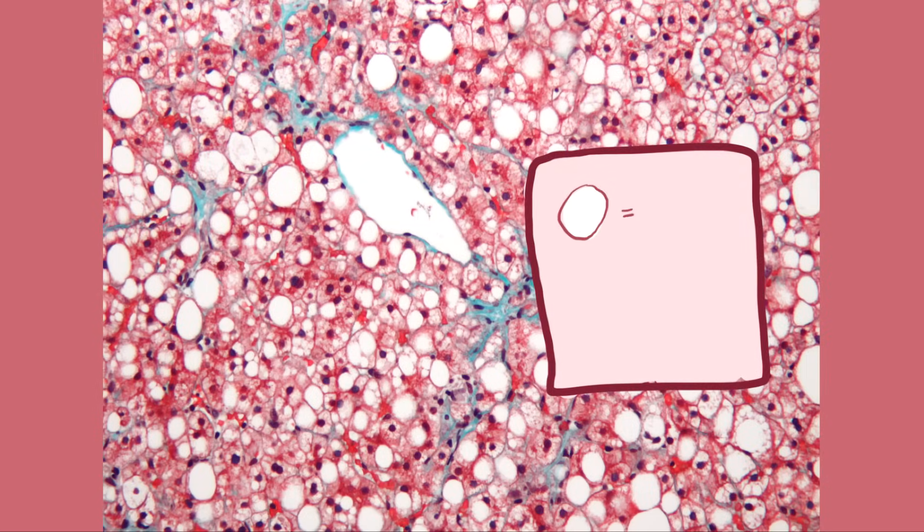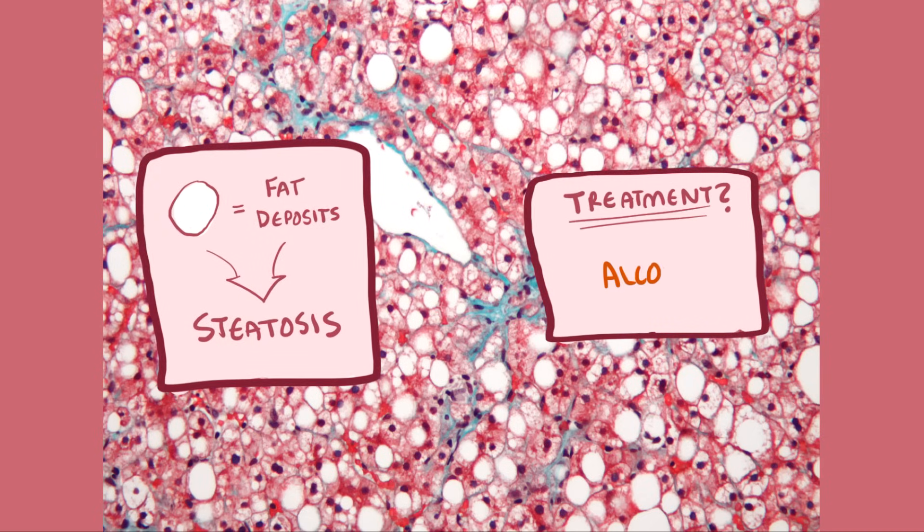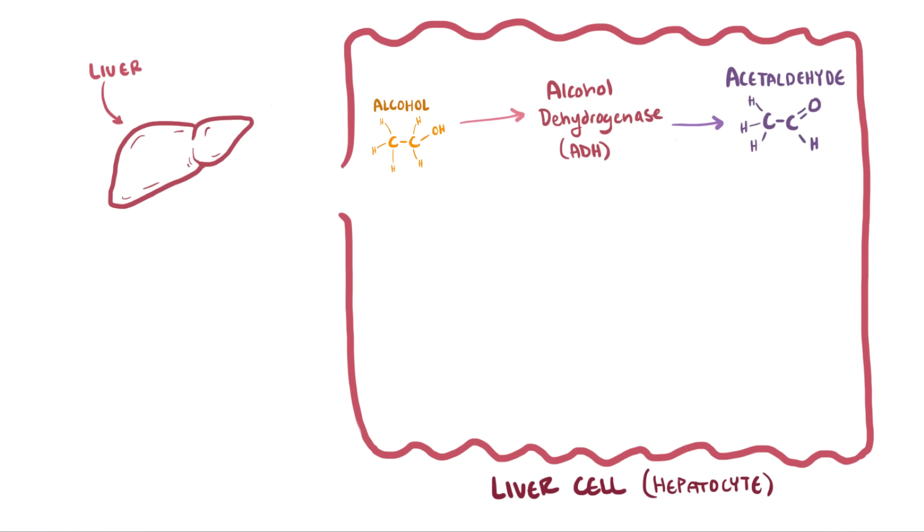All these circles are deposits of fat that contribute to fatty liver disease, and sometimes this buildup of fat in the liver is referred to as steatosis. Treating fatty liver disease usually involves simply stopping alcohol consumption. Okay, so that's fatty liver, but that's not the only thing that excessive alcohol consumption can cause, right?